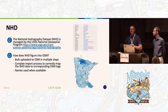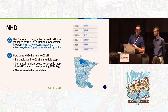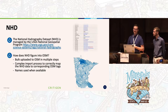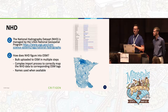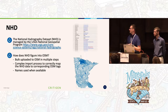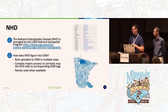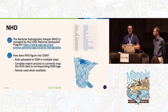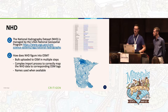Despite the back and forth, there have been a lot of bulk imports to OSM. One of them is the NHD dataset — the National Hydrography Dataset managed by the USGS National Geospatial Program — which represents the water drainage network of the United States. It was bulk uploaded to OSM in multiple steps across most of the U.S., involving a complex process to correctly map NHD feature types to corresponding OSM tags, with names brought in when available.